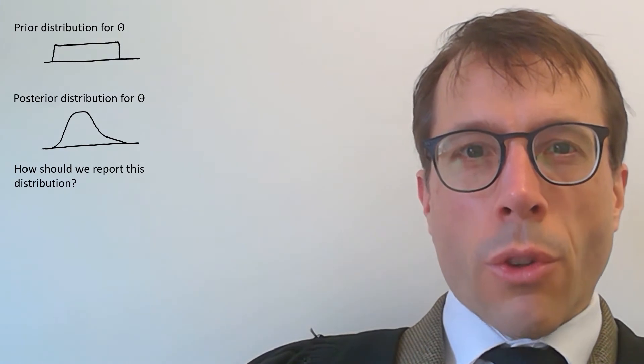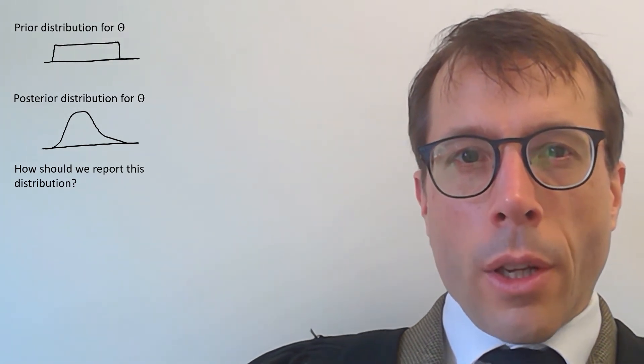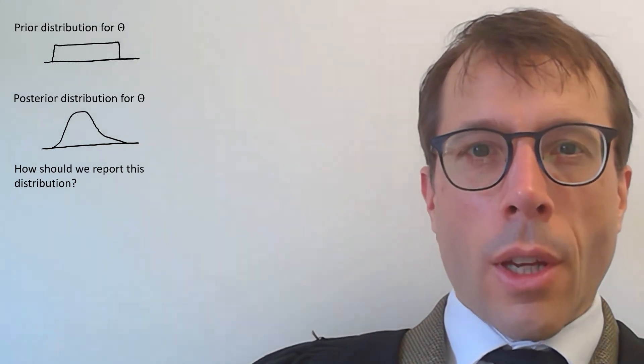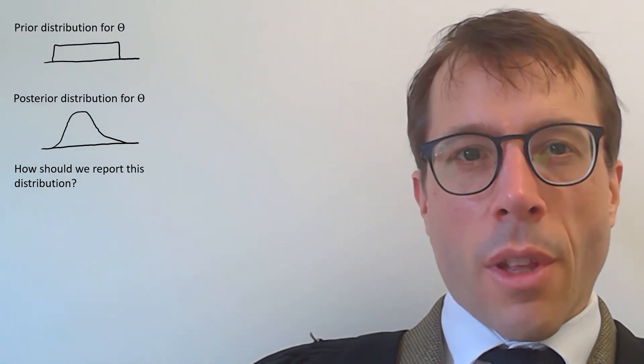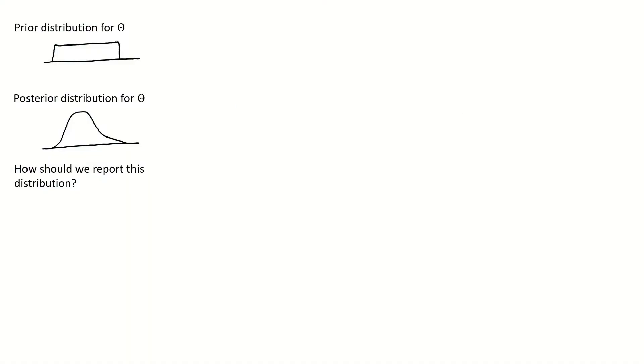It's very tempting to want to report it with a single number, what's called a point estimate. You could look at a distribution like this and say, I'll just tell them the mean. That'll give them a nice simple number they can make sense of. There's another single value readout which is a bit more popular, reporting the value with the highest likelihood. This is called the maximum a posteriori estimate.